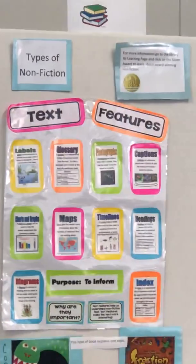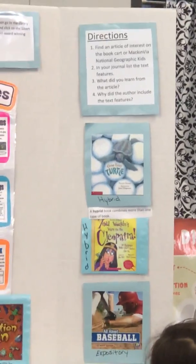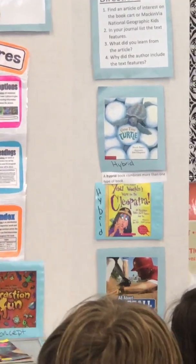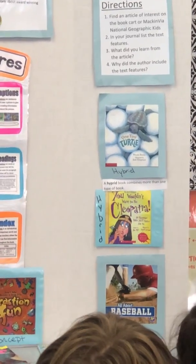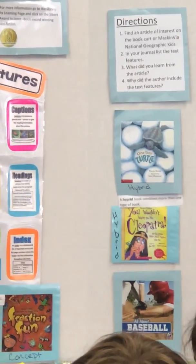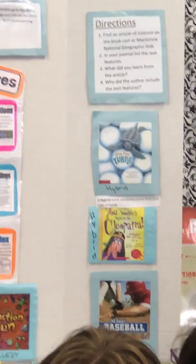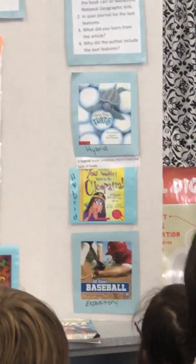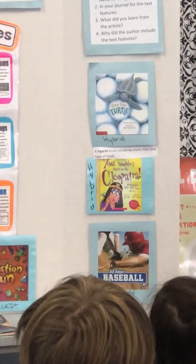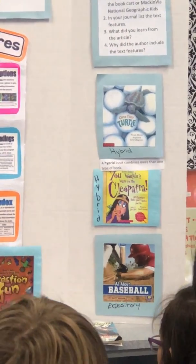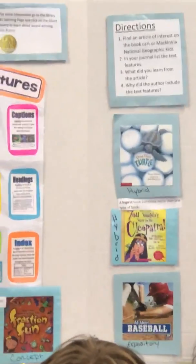We also have hybrids. Hybrids have more than one type — so One Tiny Turtle is a picture book but it's also a non-fiction book, and You Wouldn't Want to Be Cleopatra is a non-fiction book but it's also a graphic novel. And then we also have expository non-fiction books that explain a topic. So those are your different types of non-fiction books.